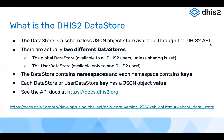The DHIS2 data store is a JSON object store — basically a place where you can store information that doesn't fit into the DHIS2 normal metadata schema. There are actually two different data stores: one that's available to all users of DHIS2, which can be restricted to a smaller group of users or user groups using the same sharing settings you might set for an indicator or dashboard. And then there's a user data store, which is available only to one DHIS2 user — no other user can see it.